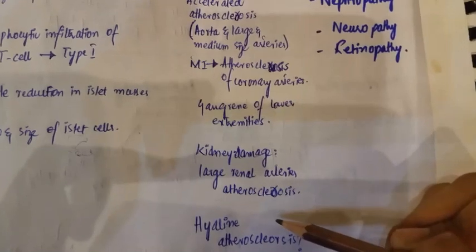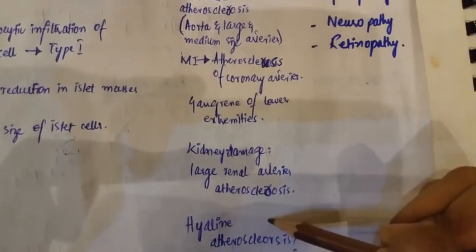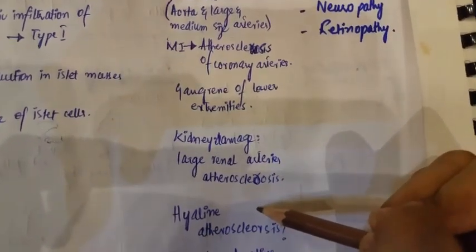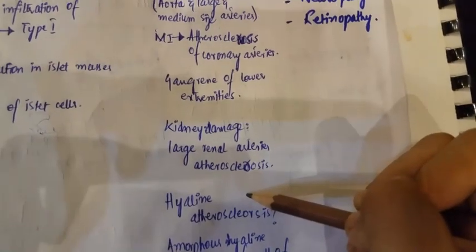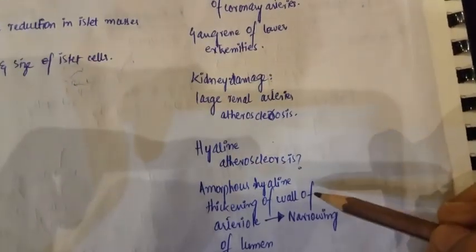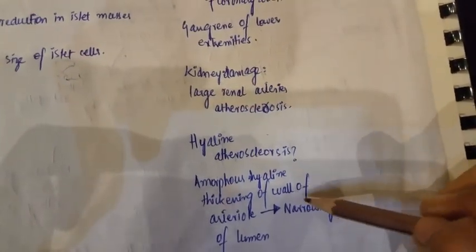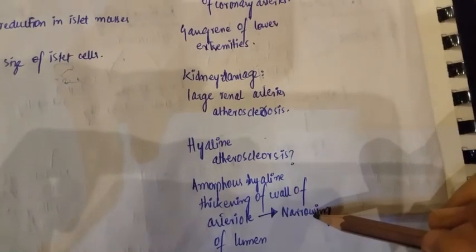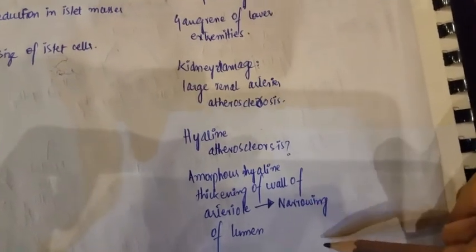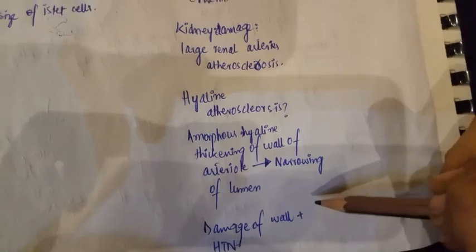What is hyaline arteriolosclerosis? Hyaline arteriolosclerosis is basically the amorphous hyaline thickening of the wall of the arterioles, which results in narrowing of the lumen, damage of the wall, and hypertension.